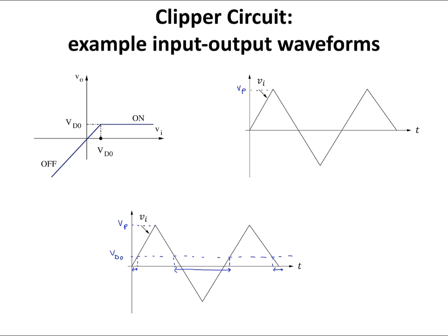From the transfer function, when VI ≥ VD0, the output is a constant value equal to VD0. So in that time range, Vout(t) equals VD0 — I'm plotting Vout in red. In those time intervals where VI ≥ VD0, Vout is clipped to VD0. For the other time intervals where VI < VD0, Vout and VI are the same, so I draw the same line as VI. This is the complete graph of Vout(t).